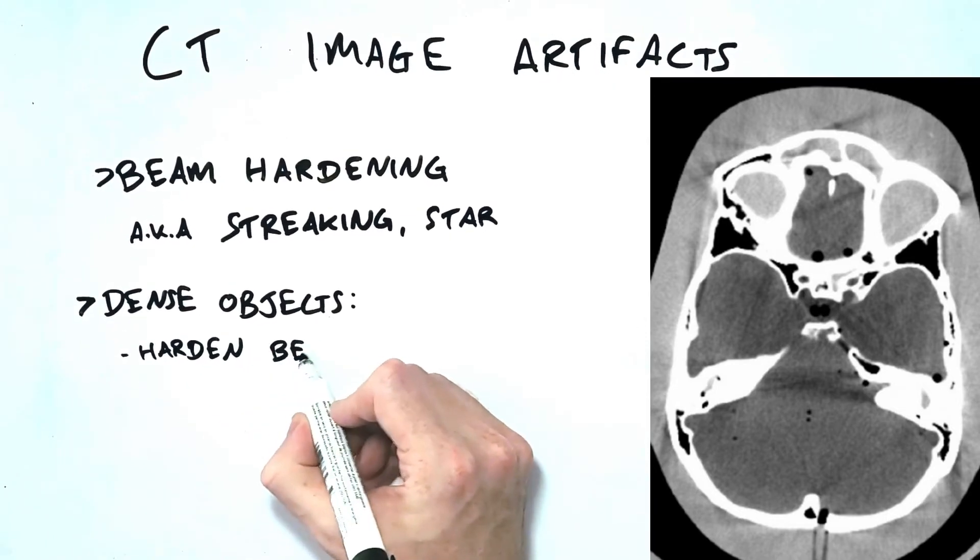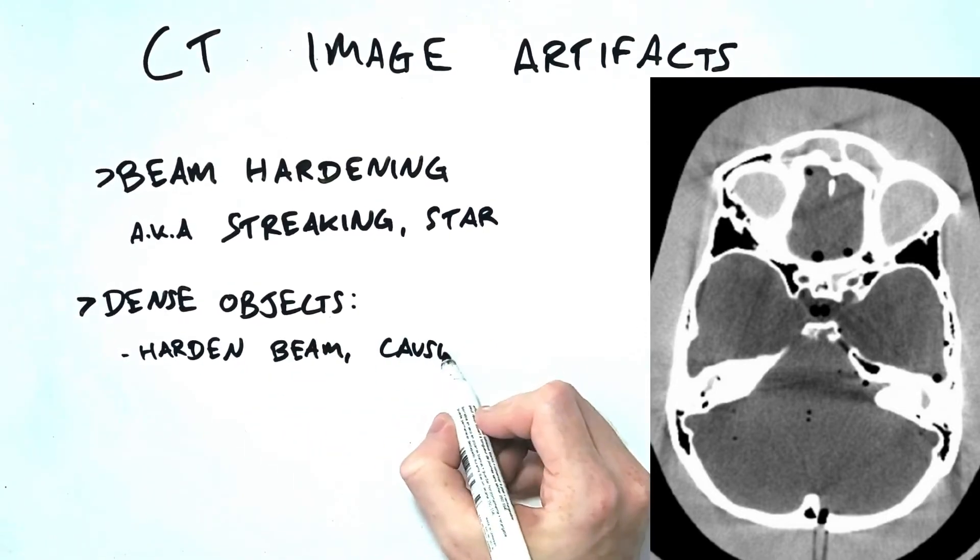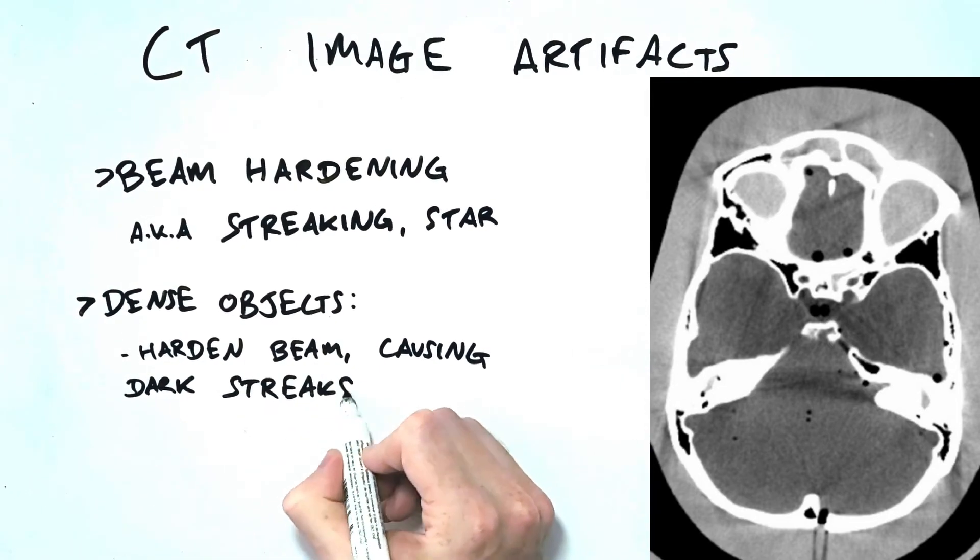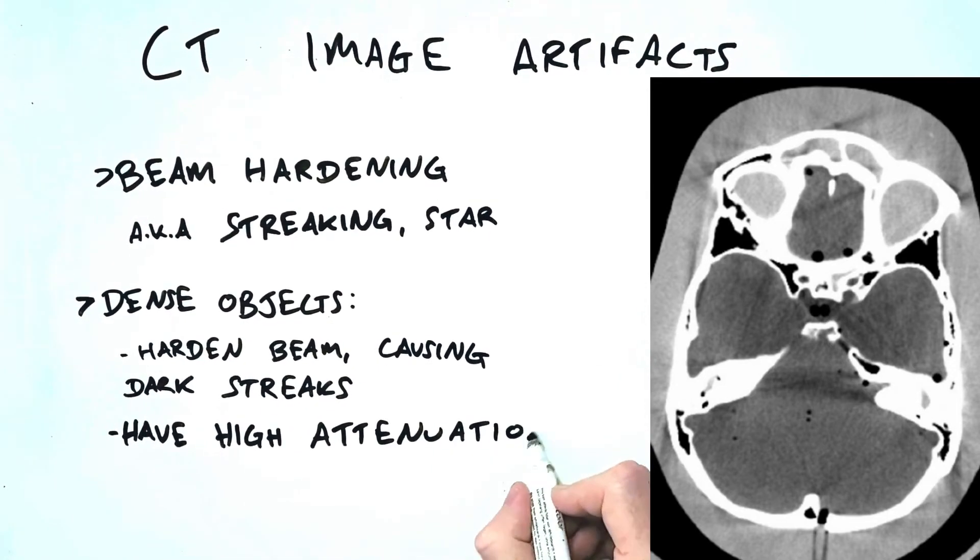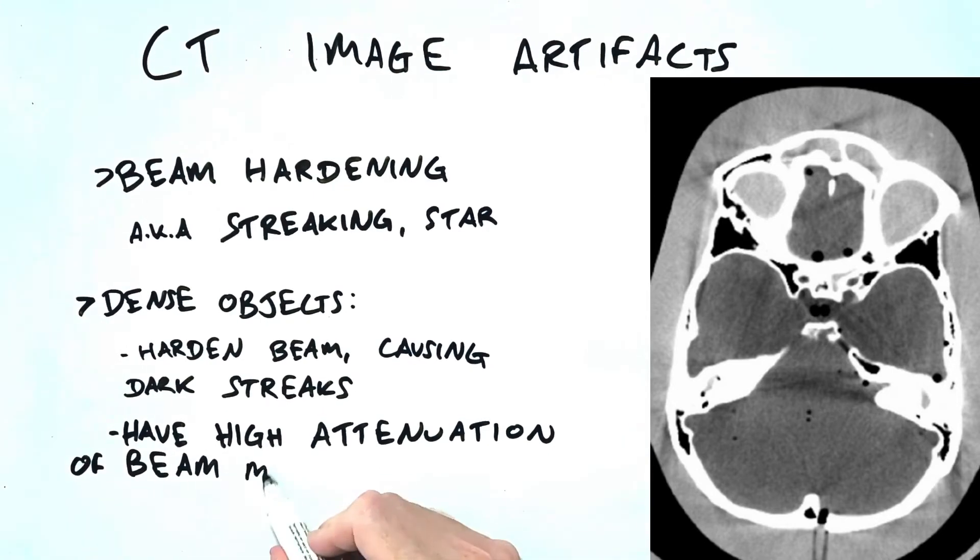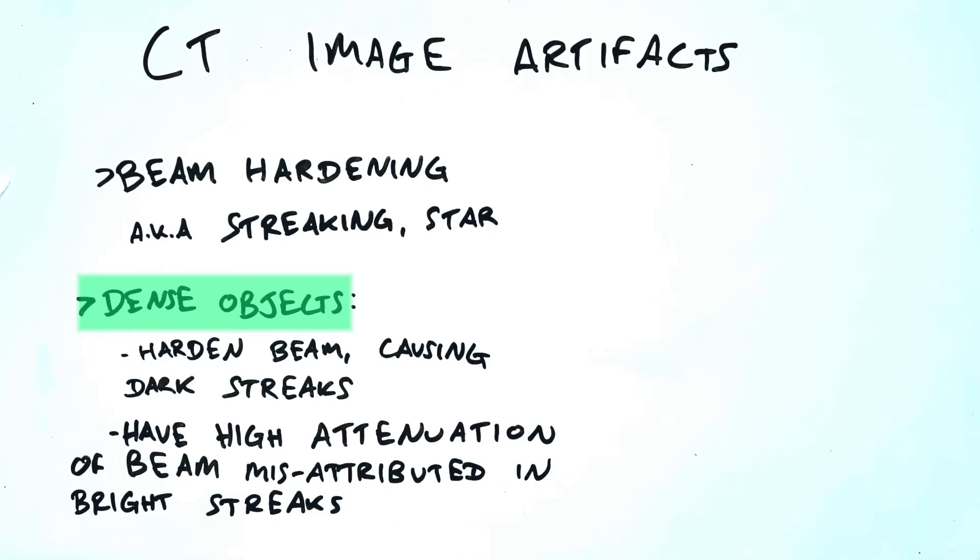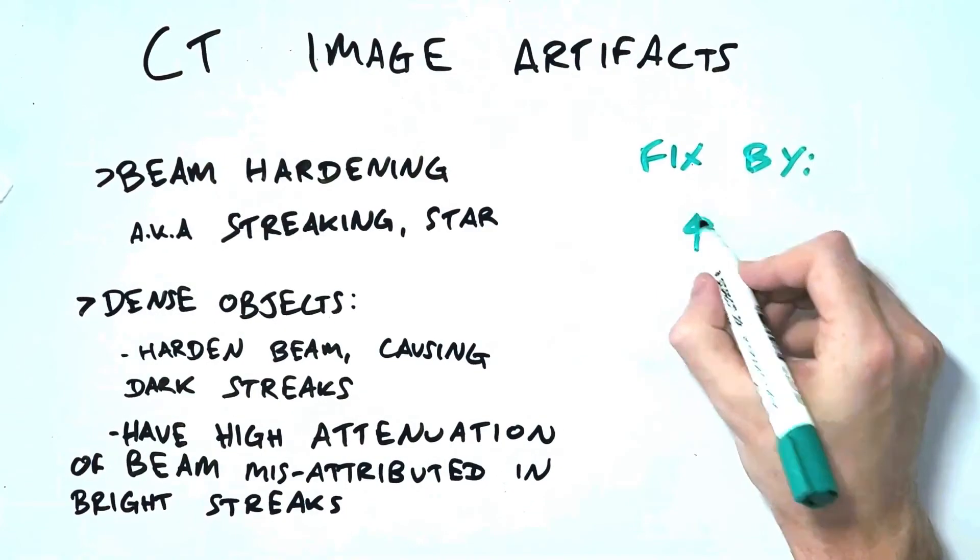The dark areas are the result of the beam having a higher average energy when passing through in that direction because the low-energy photons have all been attenuated by the dense structure. The bright areas are the result of some of that very high amount of attenuation being misattributed to nearby areas along the same projection pathway. If you want a simple answer as to why this happens, it's basically because we are scanning very dense structures which are beyond the optimal range of the scanner's capabilities.